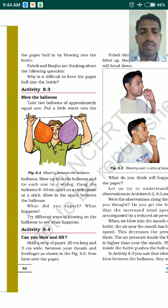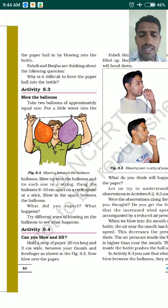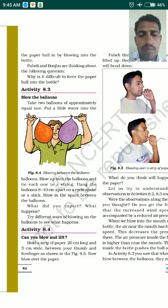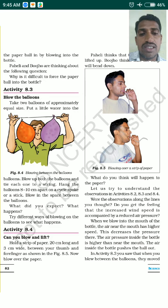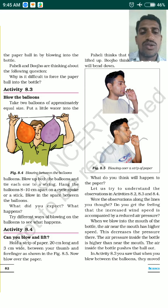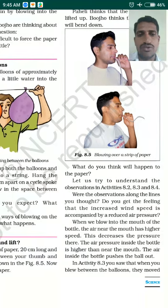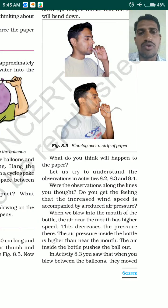For activity 8.4, take a paper strip 20 centimeters long and 3 centimeters wide. Hold it with your thumb and forefinger, place the beginning of the strip near your mouth, and blow air over the paper strip. Look at figure 8.5 — the person is blowing over the strip. Does the paper lift up or bend down? Try this at home and observe.